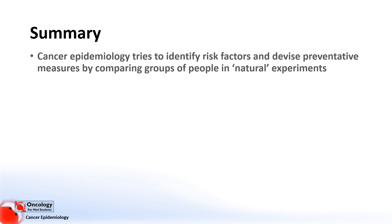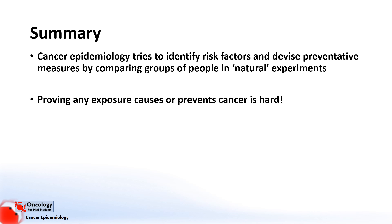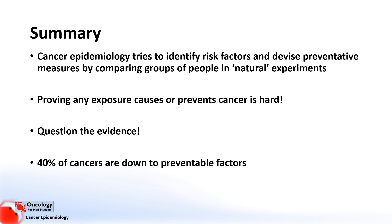So this was a brief tour of cancer epidemiology to get you acquainted with some of the basic principles. Cancer epidemiology tries to identify risk factors and devise preventative measures by comparing groups of people in what are known as natural experiments, which look at the relationship between exposures those people might have whilst accounting for confounding factors, and whether or not those exposures are related to an increased or decreased risk of cancer. Proving any exposure causes or prevents cancer is hard — it takes a huge amount of work and statistics and has its limitations. Always question the evidence, as there's a lot of misinformation with regards to the causes and cures of cancer, and there are many people with a vested interest, financial or otherwise, in making you believe false information. By addressing preventable factors, supposedly responsible for up to 40% of cancers, we can begin to find strategies to reduce the rates of cancer development.